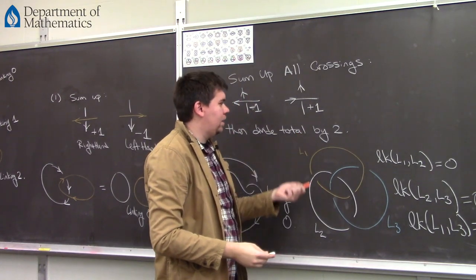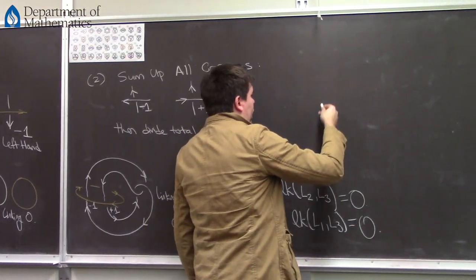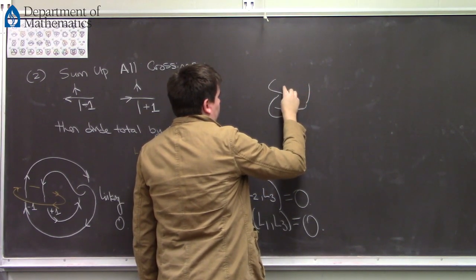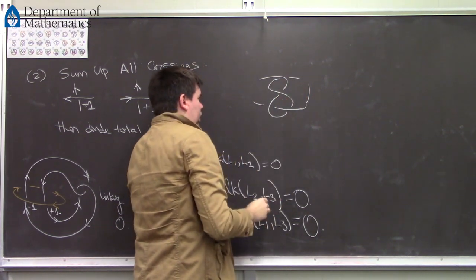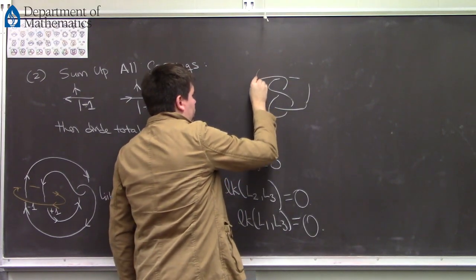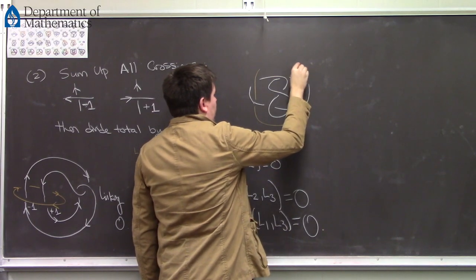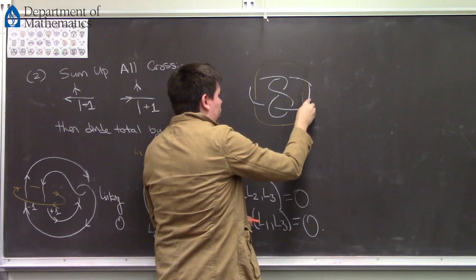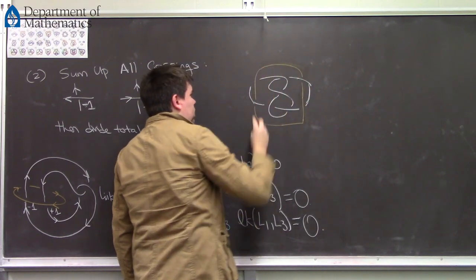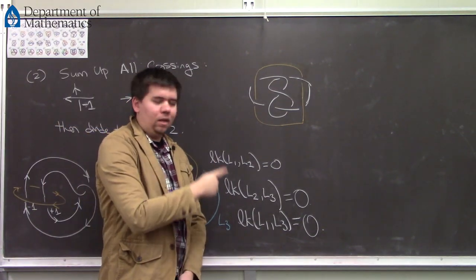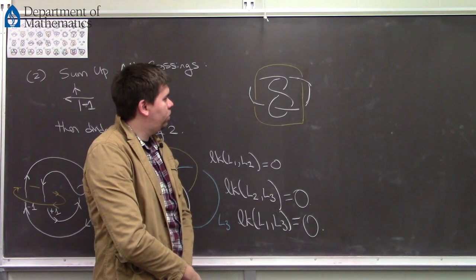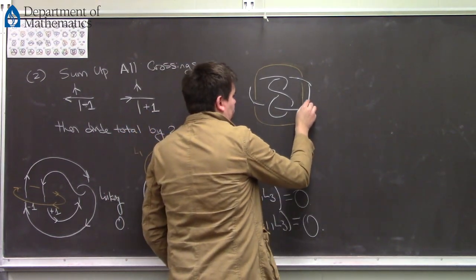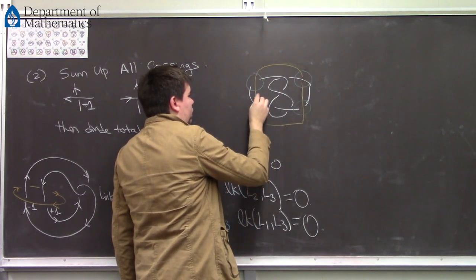Let's look at a complicated link and do it. One component is trying to be some kind of figure eight, and then maybe you have a second component that comes over — and maybe we'll make it a little more interesting, we'll say it goes over here and under this one. Just by looking at it, it's not entirely obvious what the linking number is, so we should use this definition.